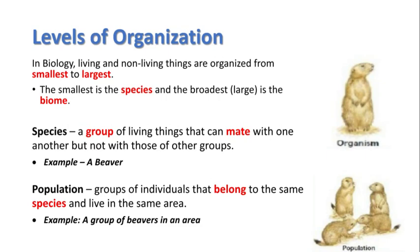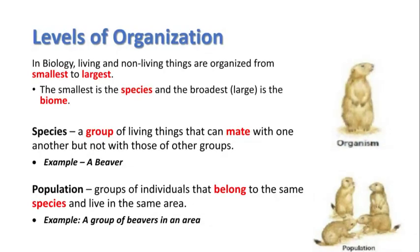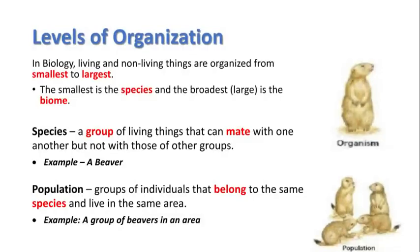Now we're going to talk about how we organize these things in the environment. In biology, living and non-living things are organized from smallest to largest. The smallest is a species — here I have one beaver — and the largest would be the biome. A species is a group of living things that can mate with one another.